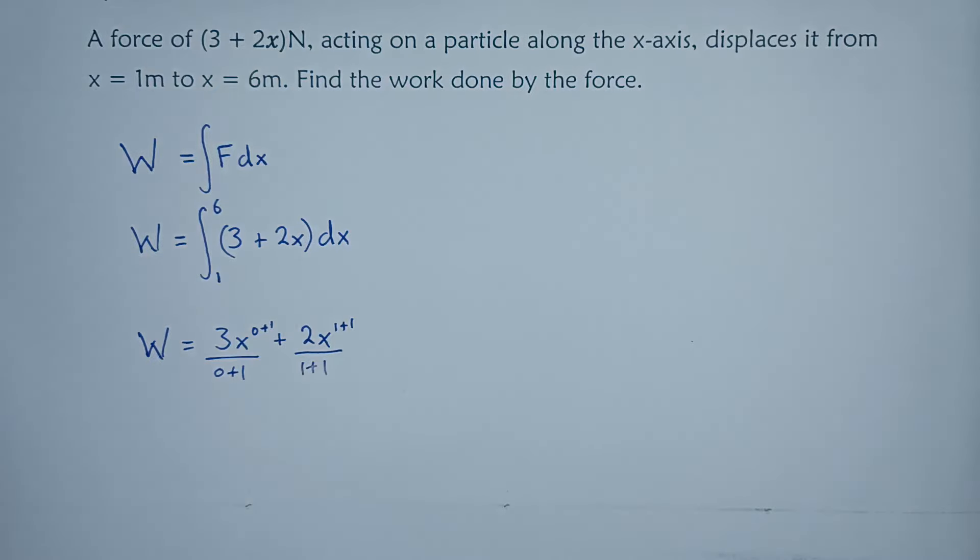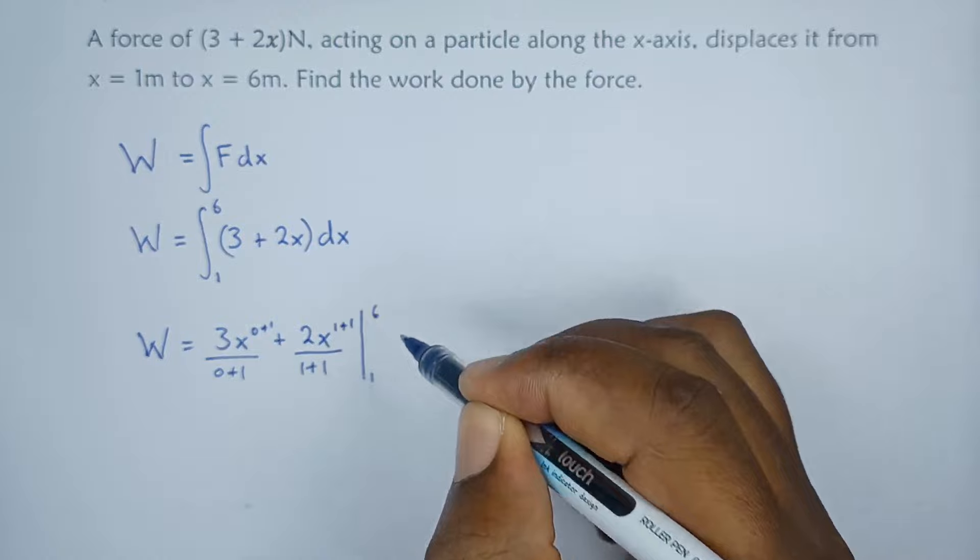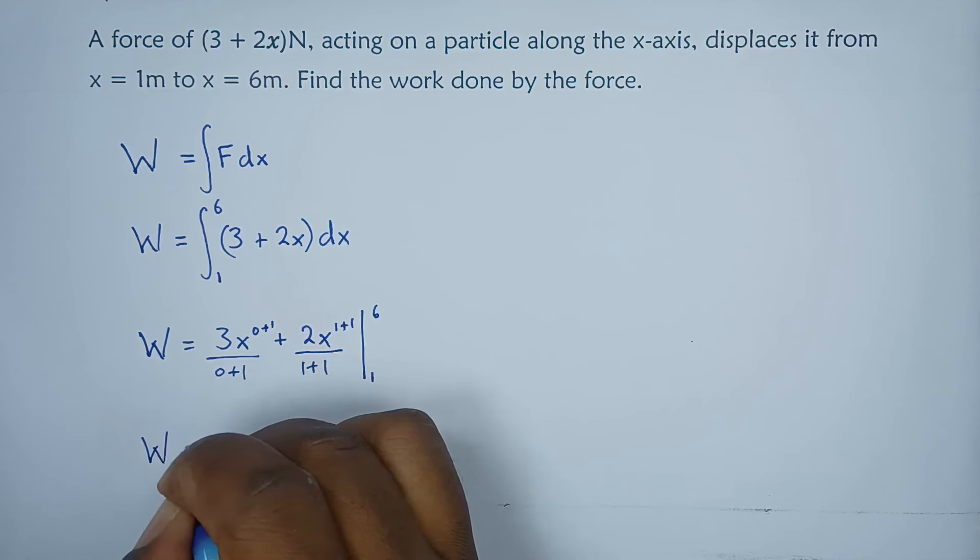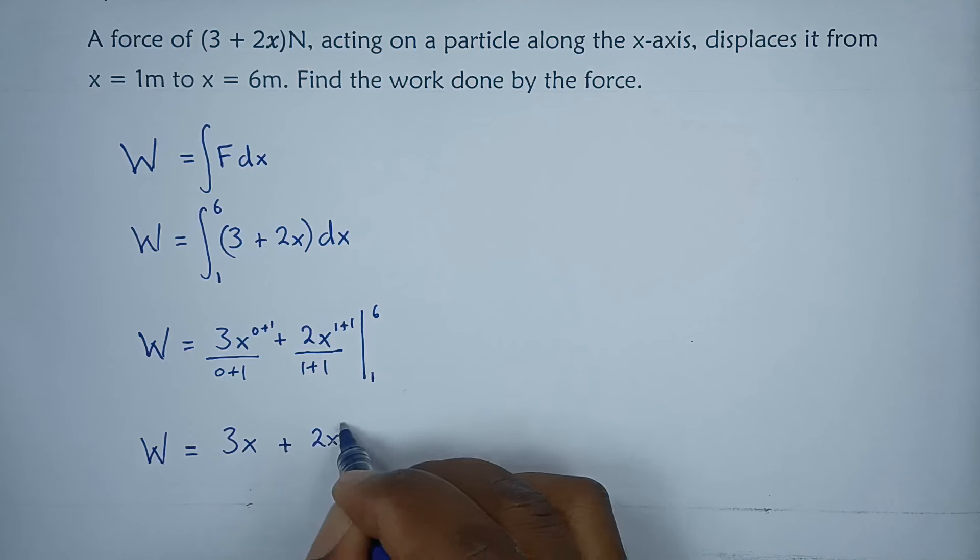Remember we have limits from one to six. So work done in this case will be equals to three x over one plus two x squared over two, limits from one to six.